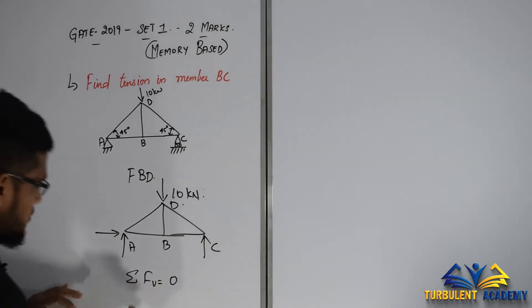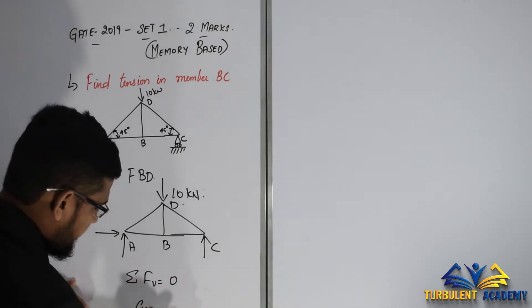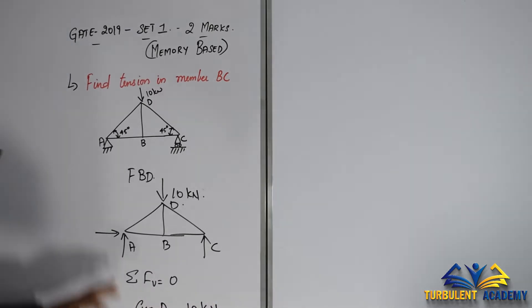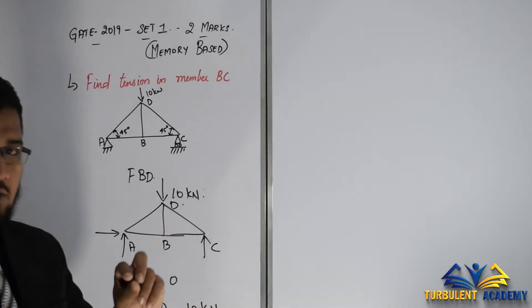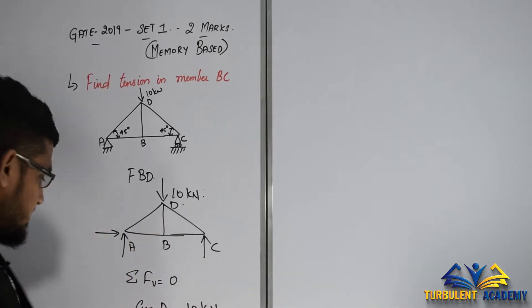Just summation of vertical force is going to be zero. So it's going to be C in Y direction. A in Y direction is going to be 10 kilonewtons. Now moment about A, as it is a pin joint, moment about A is going to be zero. Moment on pin joint is going to be zero.